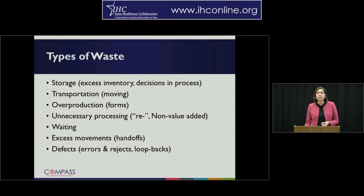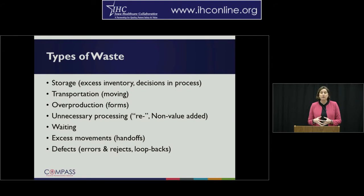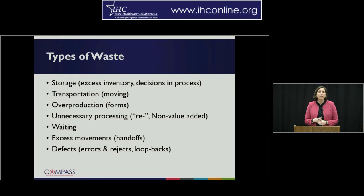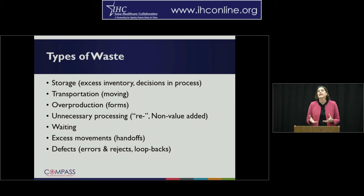Transportation — how much are we moving things around, including information via computer or electronic record? How much are we moving physical items or knowledge back and forth through handoffs? Overproduction — producing more than we need. We commonly see this with physical items like paper, but also in electronic systems such as email. Those email chains with ten people carbon copied — do all of those people really need that email? Or could it just be an FYI at the end of the week?